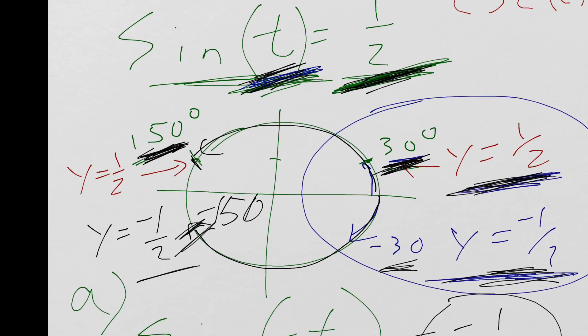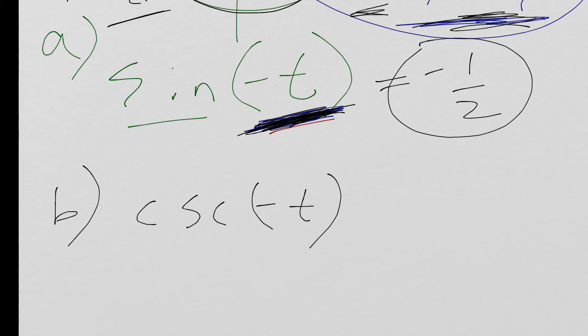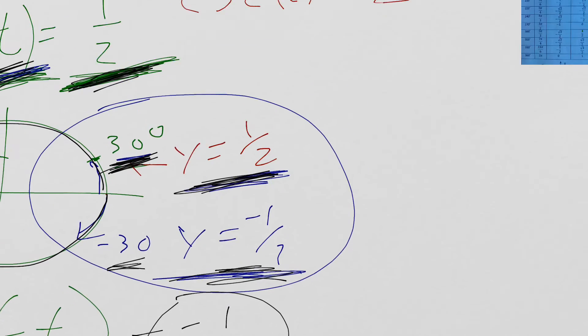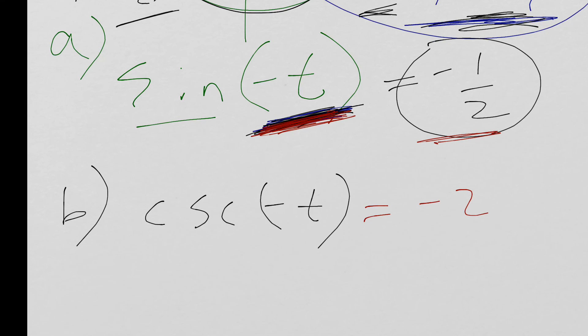Well, if sine goes to negative 1 half here, right, when I go to a negative angle, this must go to negative 2, right? Because the reciprocal of sine is cosecant, so negative 1 half will change to negative 2.